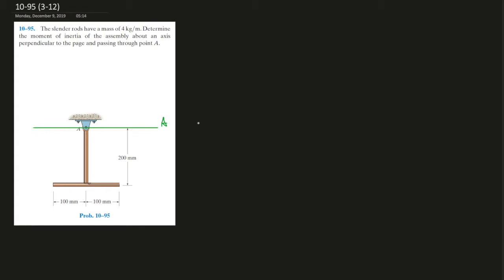Well, first we can calculate the mass of each beam. There's one over here and one over here. They're equal length, so that's 4 kg per meter times 0.2 meters.